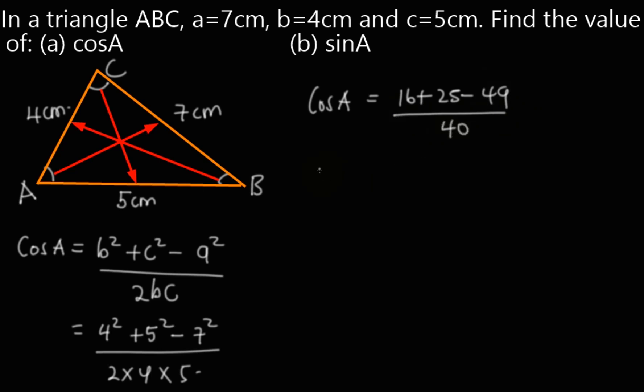So cosine of angle A is equal to, when we use our calculator, we get 16 + 25 - 49, that is, -8 divided by 40.